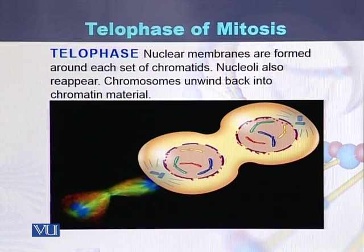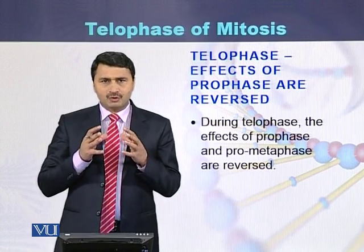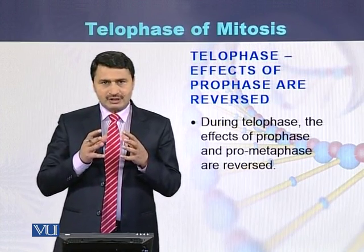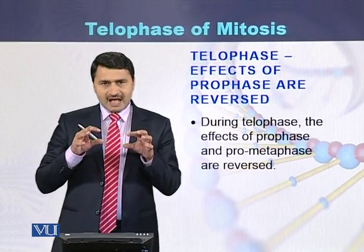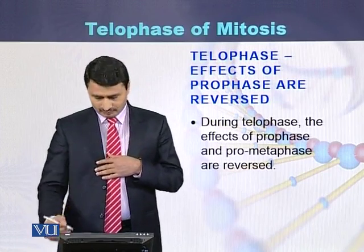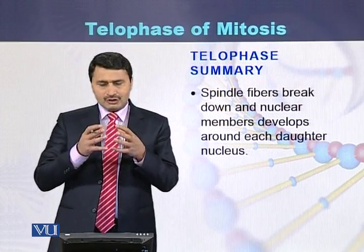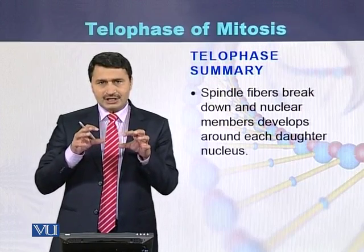During telophase, the nuclei also reappear and chromosomes unwind, converting into chromatin material. All events that took place during prophase are reversed during telophase. To summarize: during telophase, the nuclear membrane appears around the chromosomes, and one nucleus has been converted into two nuclei.